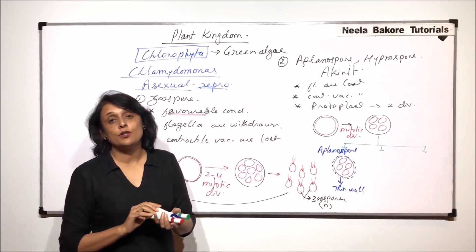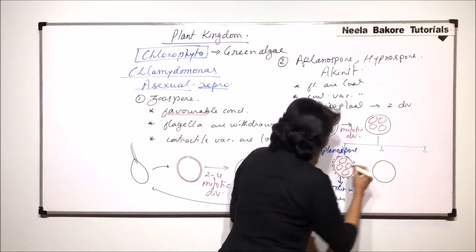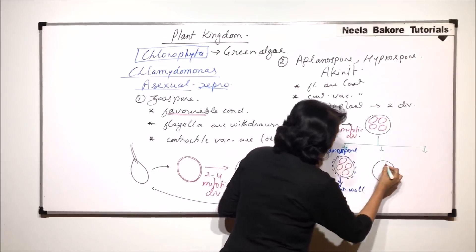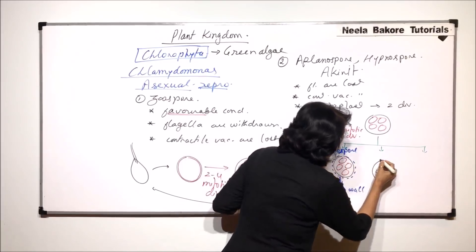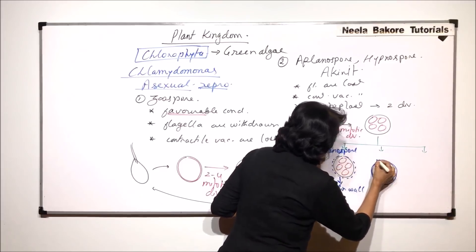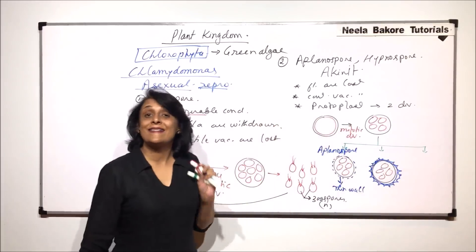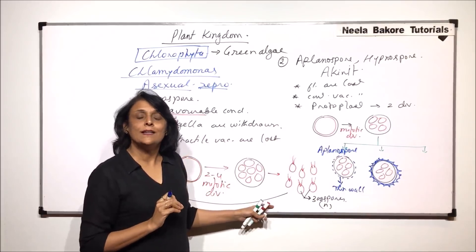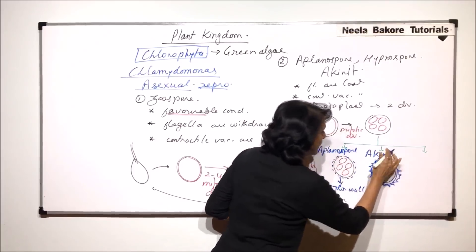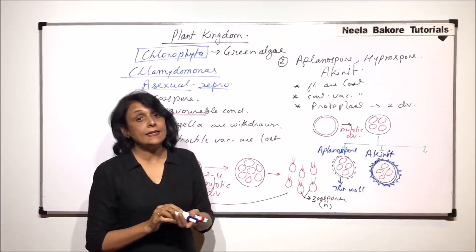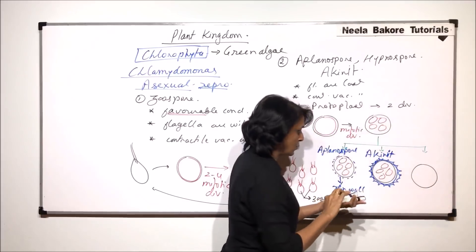If the layer which is secreted is a thick layer, then the structure has a cell wall with four spores inside. If the thick layer secreted is not red — just a transparent or translucent layer — then this is an akinete. But if the layer is thick and it is red, then that type of spore is known as a hypnospore.